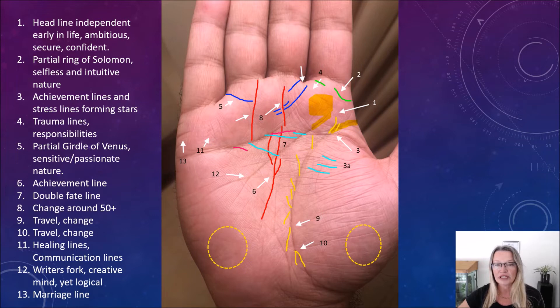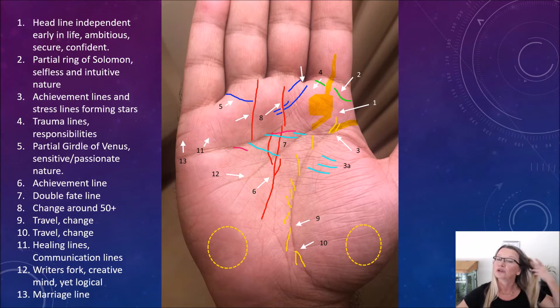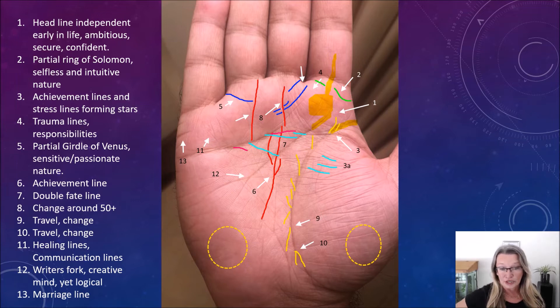Now, number two, we have this green line under the index finger. And it's like broken up, but I see that as a partial ring of Solomon. And it's good that it's partial because it allows the energy to flow. But it does show some selfless and intuitive abilities. Someone who understands people, they understand what they're going through, whether they are going through hard times or good times, and they almost sense it. They probably only have to speak to the person and they sense what that person is going through, through their feeling or facial expressions. So that's a good mark to have there.